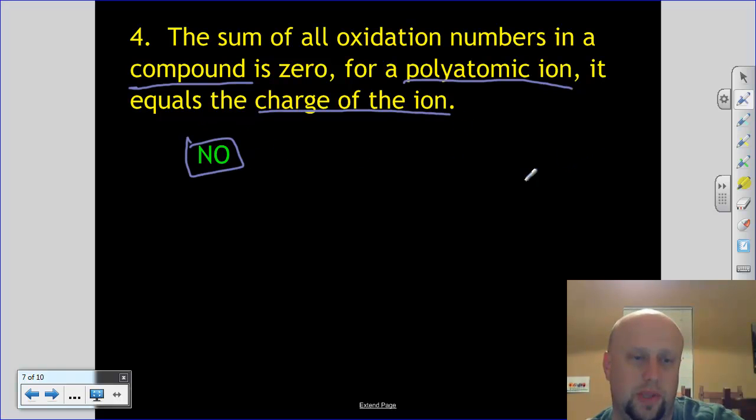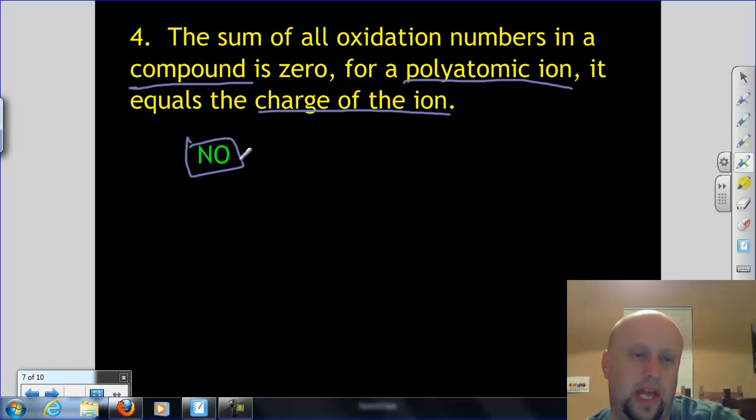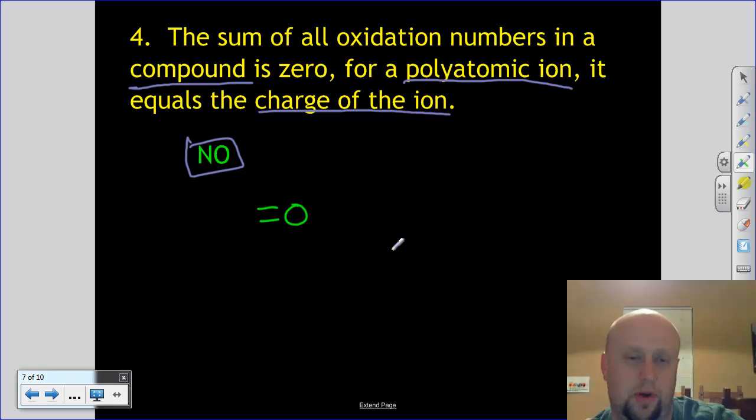So here's the deal. You have a compound given to you, in this case NO. The charge on that NO, if it has a charge, the sum of the oxidation numbers, in other words, if I add up all the oxidation numbers, it has to equal whatever the charge is. If there's no charge given, it has to equal zero.